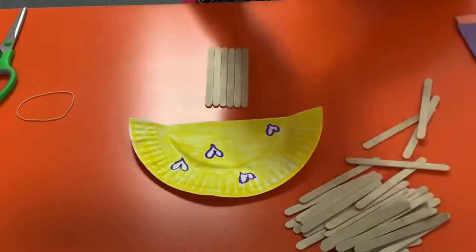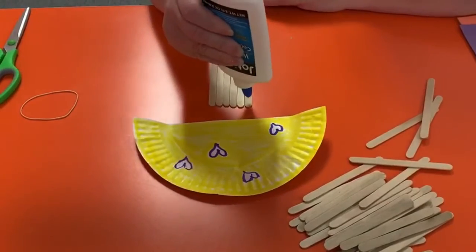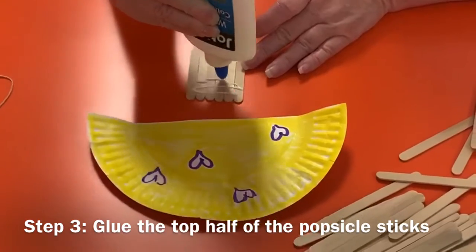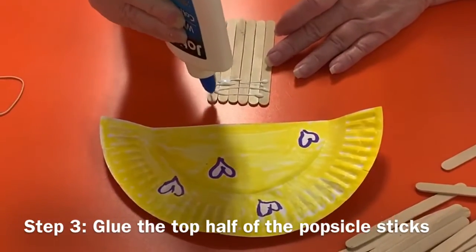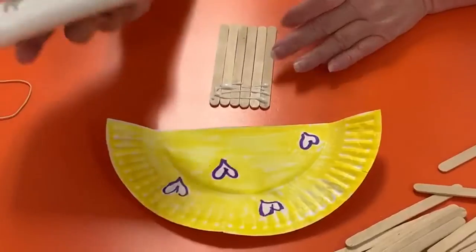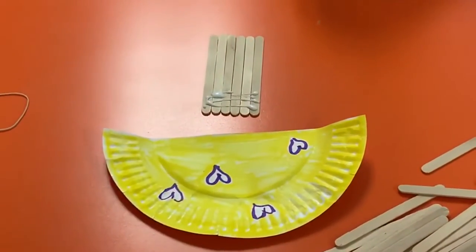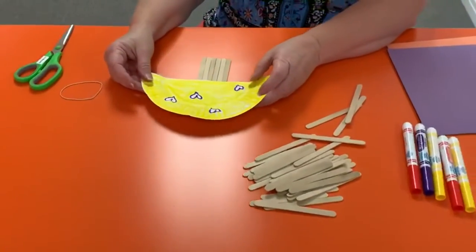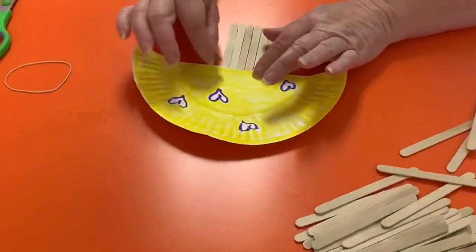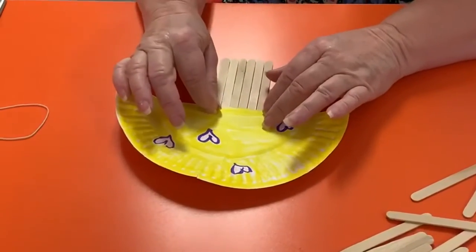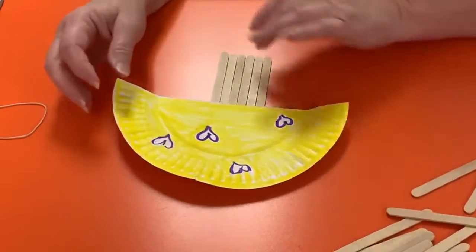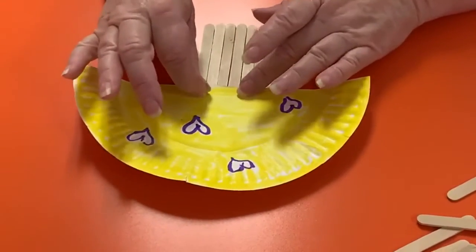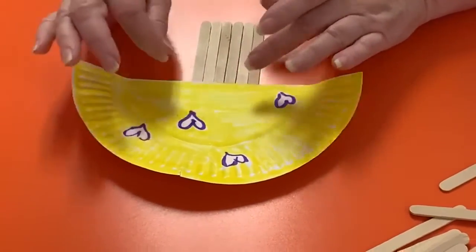And we are going to come right along here and just put a couple of lines of glue, just kind of like that. Make sure every stick has some glue on it. Now, if you're doing this at home, you might have some paper underneath you, or else do it on a table that you can wipe down really easily. And we're just going to set that right on top.